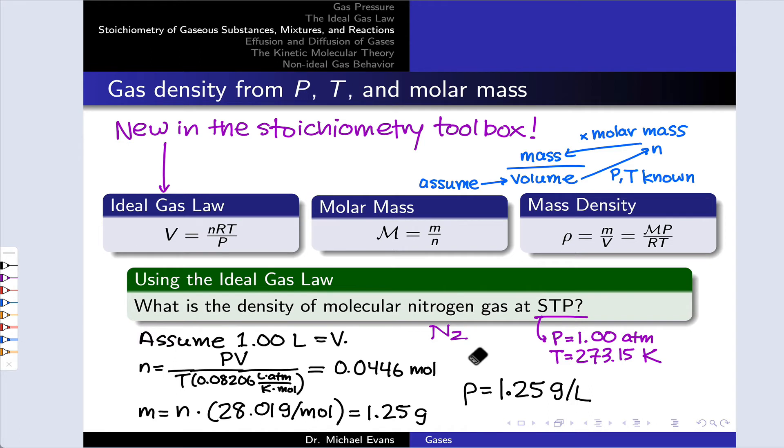Notice that the ideal gas law was used as a key tool in the stoichiometry toolbox to calculate a number of moles from the known pressure, volume, and temperature. Pressure and temperature came from STP, and the volume came from our assumption of one liter of volume of gas.